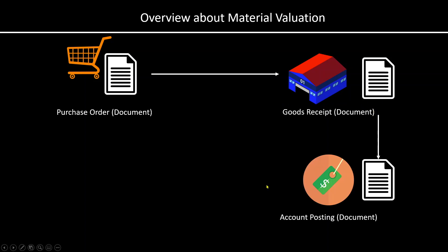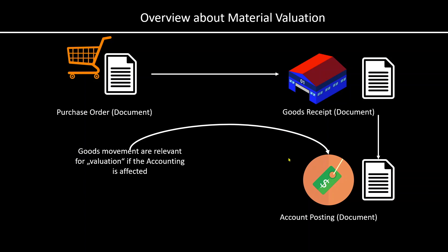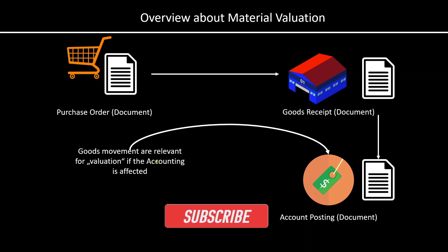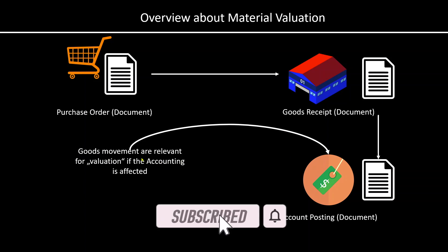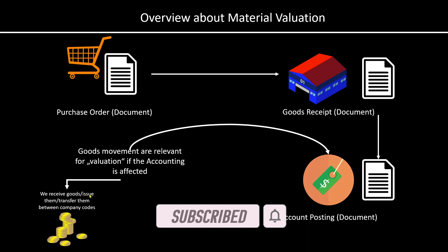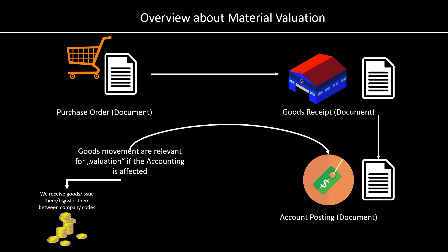For this goods received, there will be one accounting document posted simultaneously, because once we receive goods, the value of our stock will increase. Goods movements in general are relevant for valuation if the accounting is affected. So this means when we receive goods, or we issue them, or we transfer them between company codes — which is also called intercompany stock transfer — then the goods are subject to valuation. So we will track their value along the way.